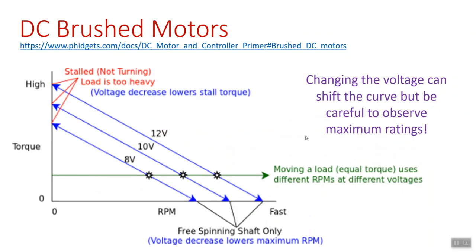So the idea is, if the motor has a preference for where it should be in its operating characteristics on its curve, how would you use it in a scenario where you might want to have variable speed? One way to do that is to change the supply voltage, and that's perfectly acceptable for DC motors. This shows one rated at 12 volts, but you could run it at 10 or 8 or anything lower than that. What that does is it shifts the curve down.